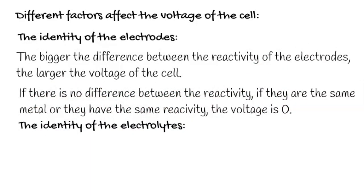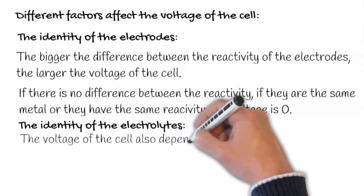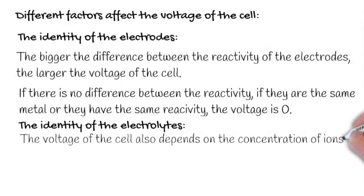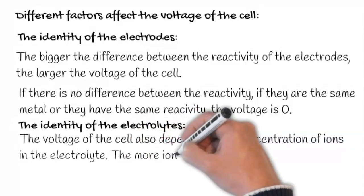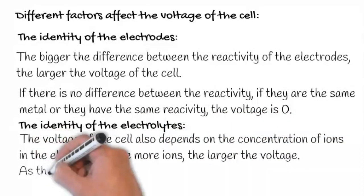The identity of the electrolyte also matters. The voltage of the cell depends on the concentration of ions in the electrolyte. The more ions, the larger the voltage.